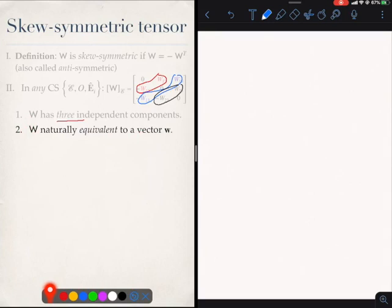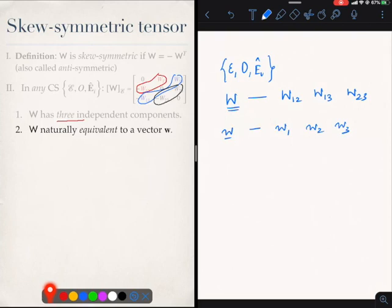Now what we have with us is that if we pick any coordinate system E with origin O and unit vectors capital E_i, then W has independent components W_12, W_13, W_23. And small w has independent components w_1, w_2, w_3. So we have to relate this set with that set. And there are many ways to do it. We have to choose a convenient way.